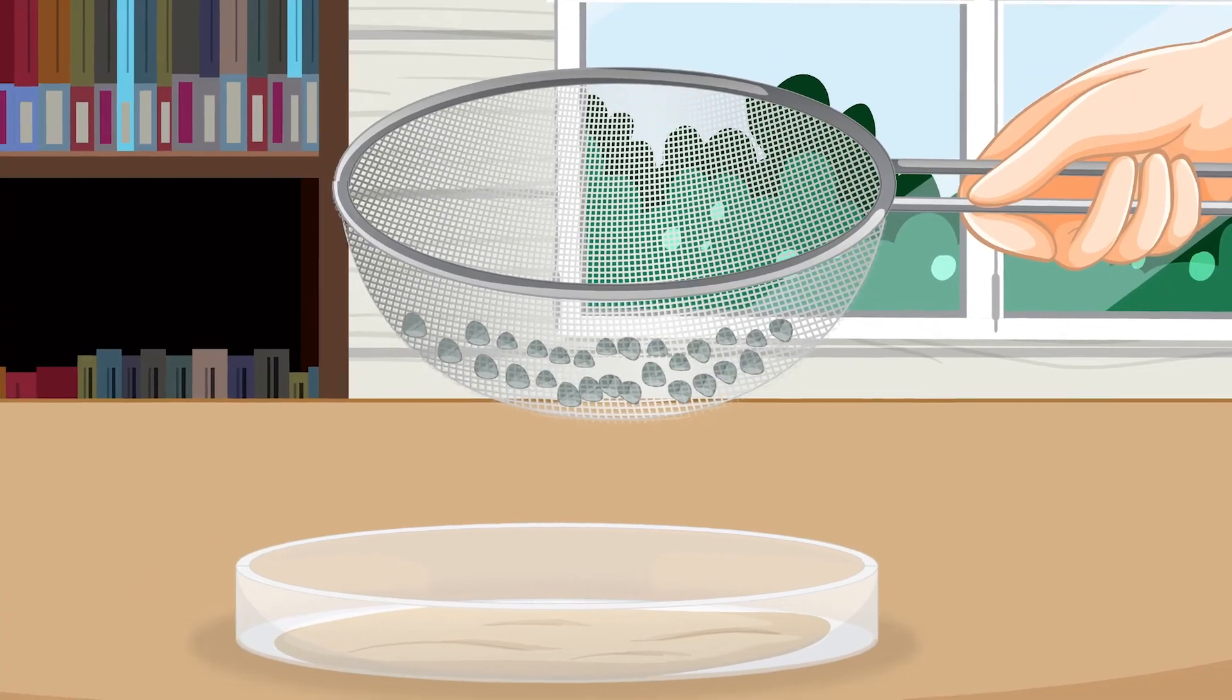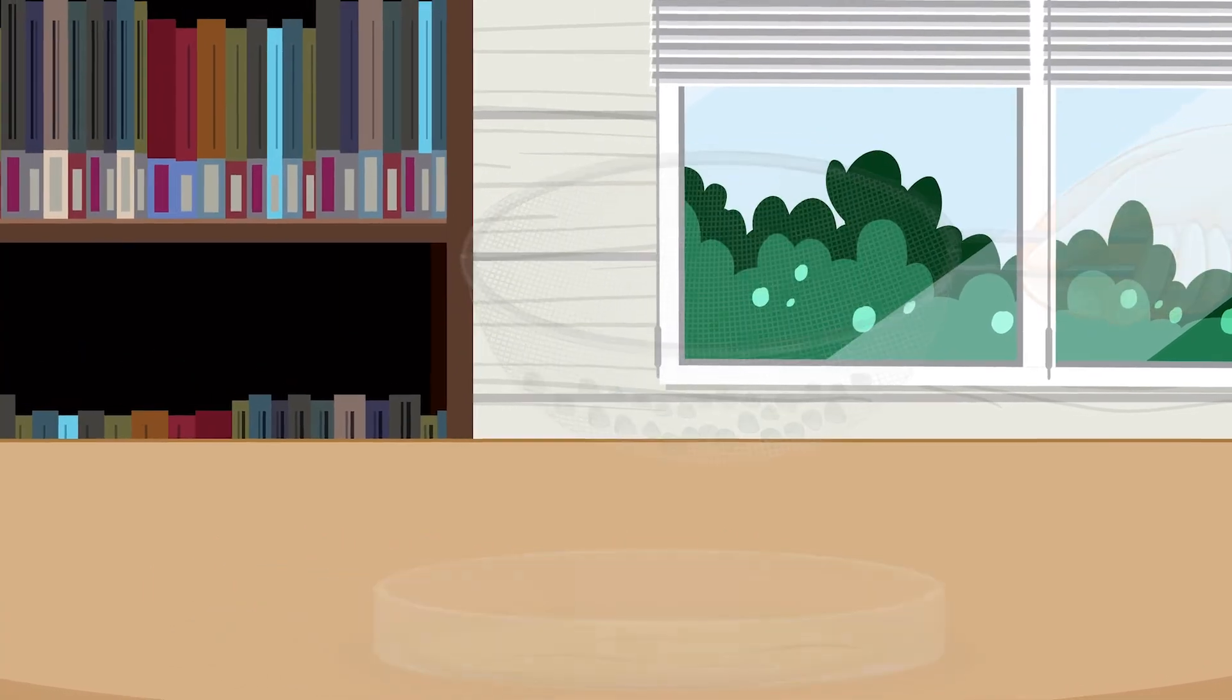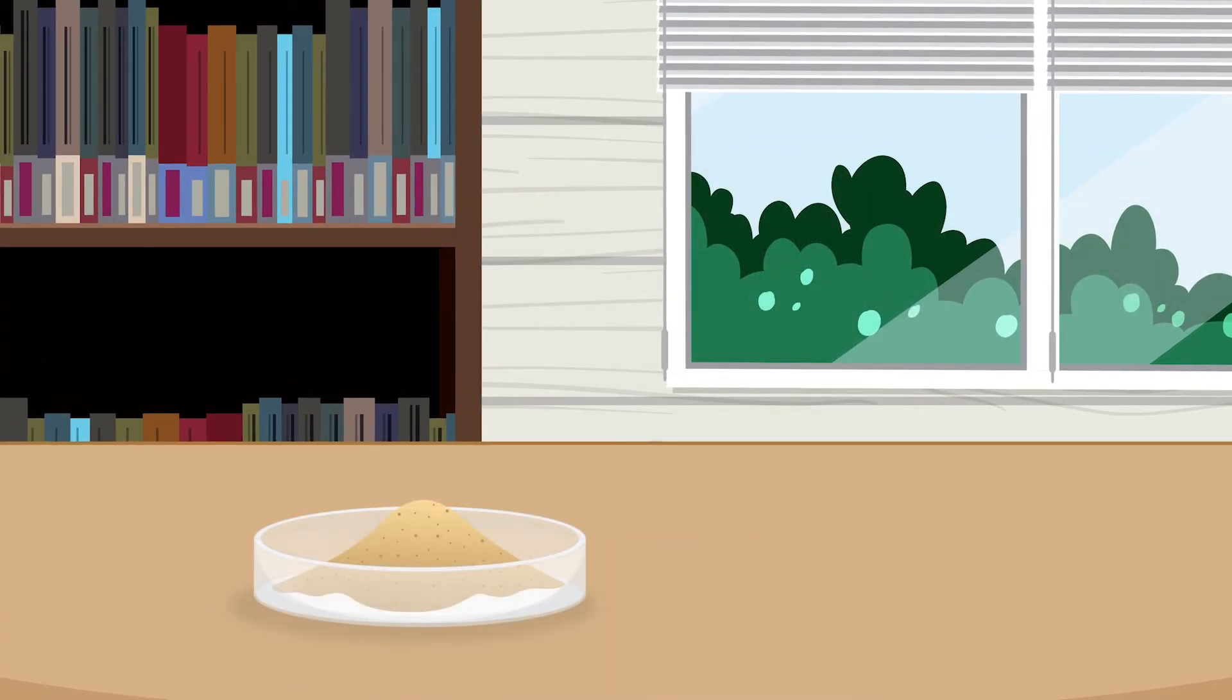Now that we've separated the mixture, we can pour the sand back into its original dish and the gravel back into its dish. The sifting process has successfully separated the mixture into its individual components, sand and gravel, based on the difference in particle size.